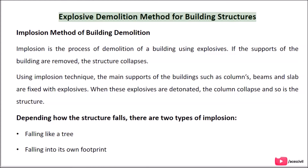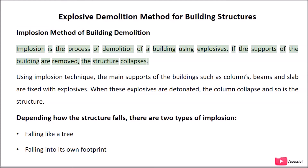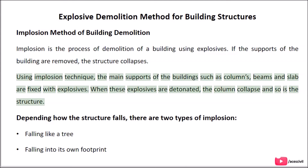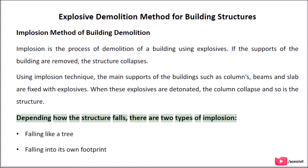Explosive demolition method — Implosion: Implosion is the process of demolition of a building using explosives. If the supports of the building are removed, the structure collapses. Using the implosion technique, the main supports of the building such as columns, beams, and slabs are fixed with explosives. When these explosives are detonated, the columns collapse and so does the structure. Depending on how the structure falls, there are two types of implosion: falling like a tree, and falling into its own footprint.